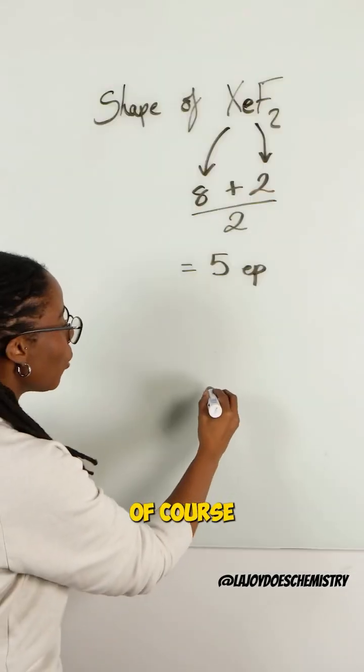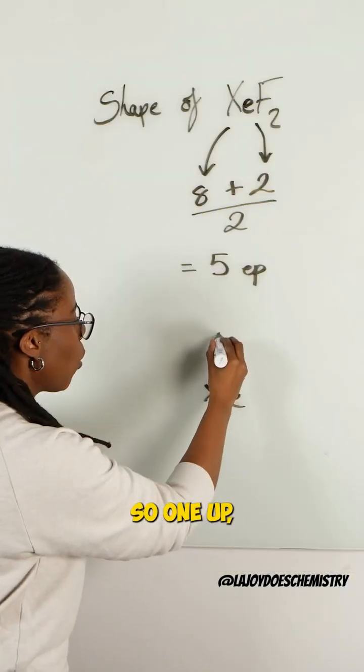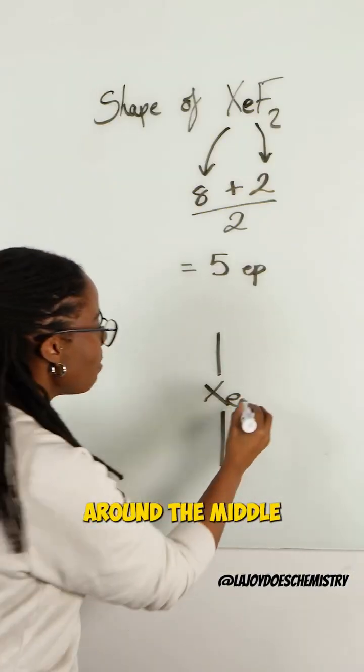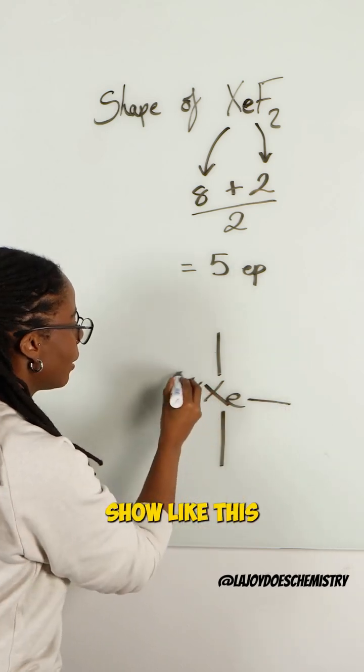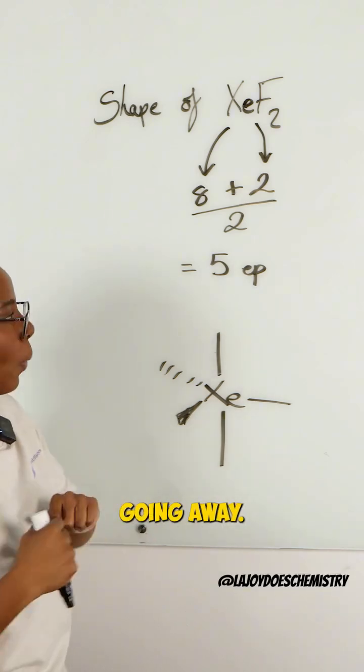Now when we have five electron pairs, of course, our shape is based on a trigonal bipyramid. So one up, one down, and then three around the middle, which I'll show like this. So the solid wedge coming out towards you, the dash wedge going away.